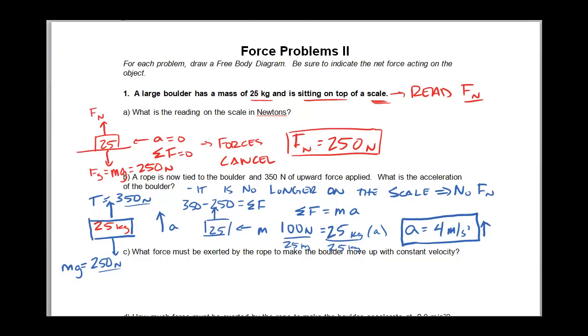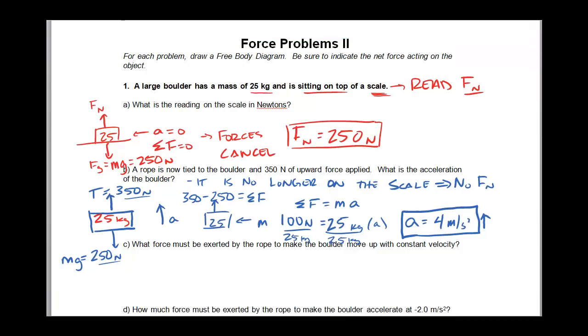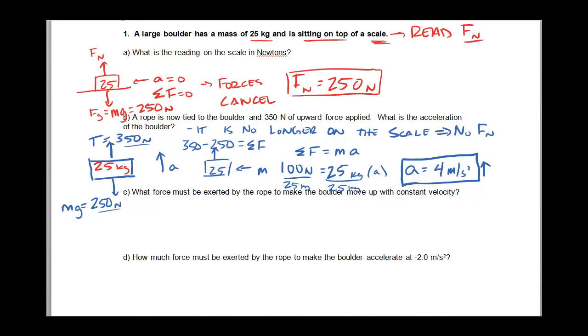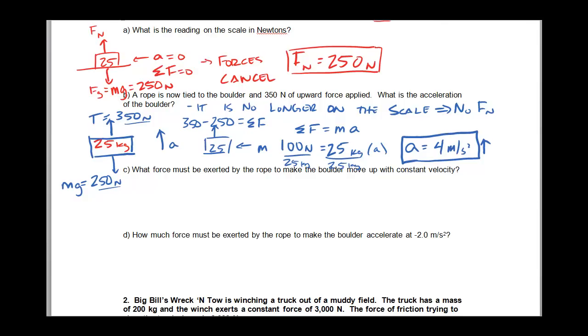So, change pen colors again. What force must be exerted by the rope to make the boulder move up with a constant velocity? So we have, again, our 25 kilogram mass. It still has its weight. We've already found that. It's 250 newtons. And we're going to pull up again with tension.